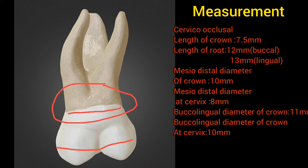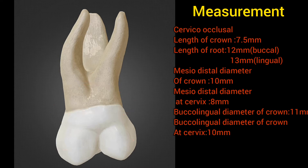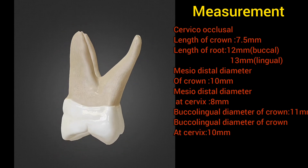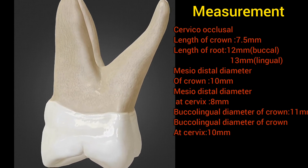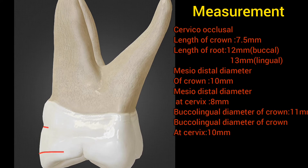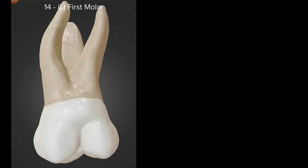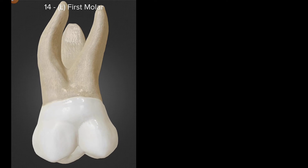The buccolingual diameter of the crown is 11 mm, while the buccolingual diameter at the cervix is 10 mm.